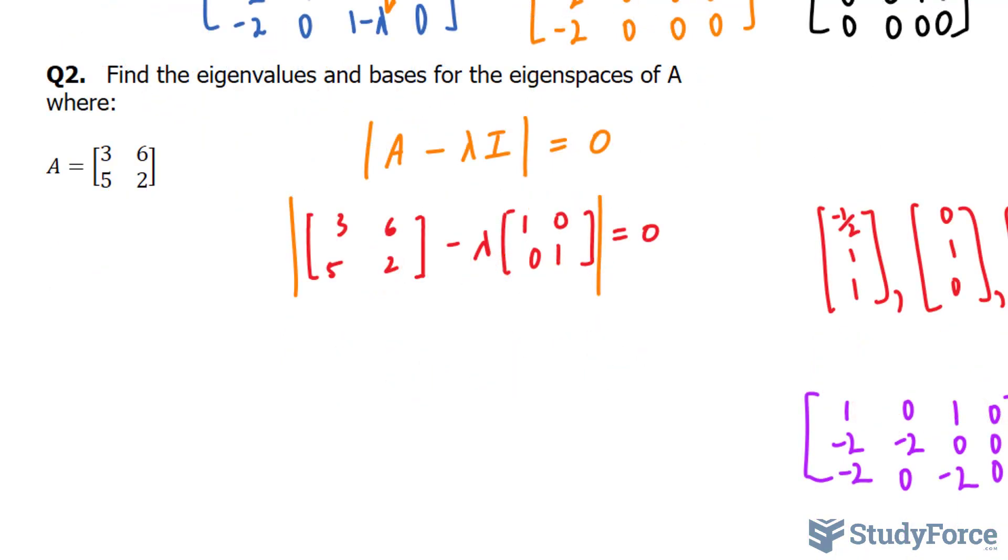To subtract two matrices, that's not hard to do. We subtract element by element. And this should give us 3 minus lambda as the first element in the first row. 6 minus 0 is 6. 5 and 2 minus lambda. And now we'll find the determinant of this matrix and make it equal to 0.